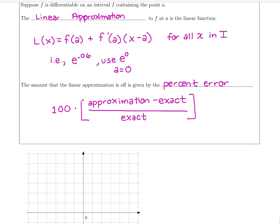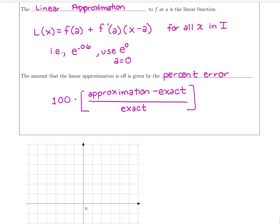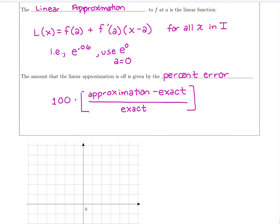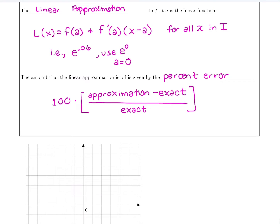So normally I can't do e to the 0.06 in my head without a calculator, but I know anything to the zero power is one. So we'll use a specific value a that we can do in our head to figure out a value that we couldn't figure out in our head before.